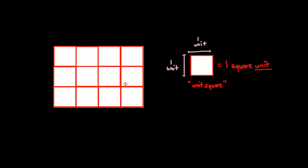So, if I can cover the entire shape with the square units, and I just count how many unit squares I actually have, let's see, I have 1, 2, 3, 4, 5, 6, 7, 8, 9, 10, 11, 12. I have 12 unit squares.